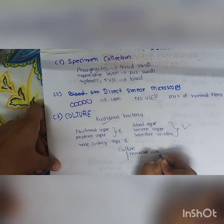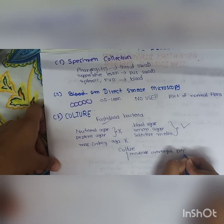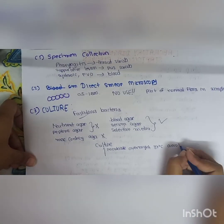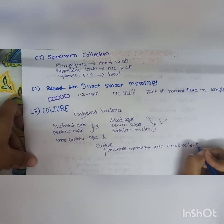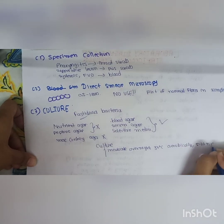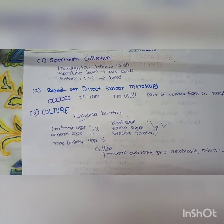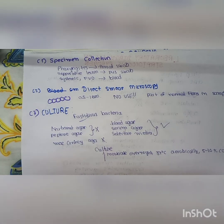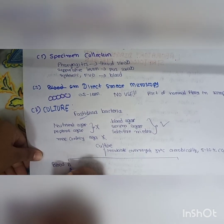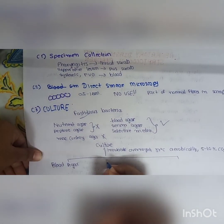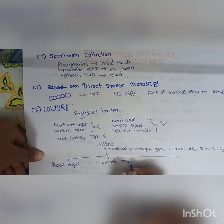For culture, we incubate S. pyogenes overnight at 37°C aerobically in the presence of 5 to 10 percent carbon dioxide. The three main culture media used are: blood agar, liquid media, and selective media.